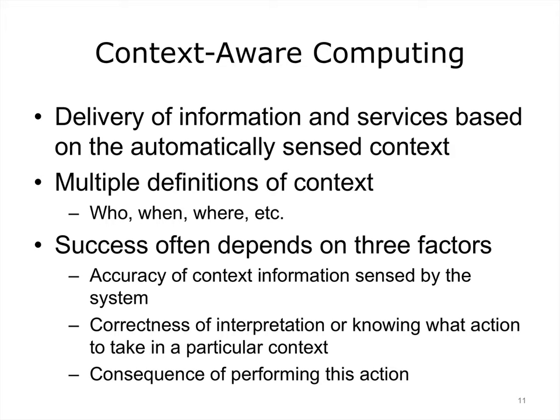Each of these definitions calls for a particular set of technologies capable of capturing that context. For example, RFID tags can assist with identification of objects, while global positioning systems (GPS) capability in smartphones helps with geographic positioning. Many smartphone weather apps provide weather alerts based on a user's present location, and the app Foursquare can take into account user preferences, recommendations from people the user trusts, and GPS location to make recommendations of places to go near the user.